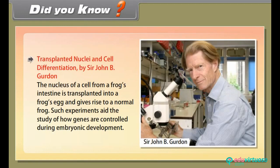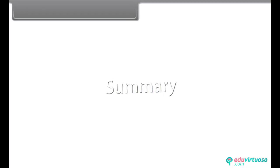Did you know? Transplanted nuclei and cell differentiation, by Sir John B. Gurdon. The nucleus of a cell from a frog's intestine is transplanted into a frog's egg and gives rise to a normal frog. Such experiments aid the study of how genes are controlled during embryonic development.